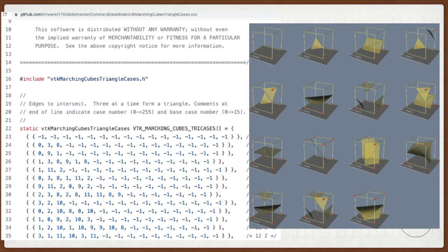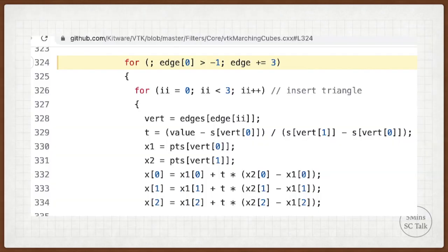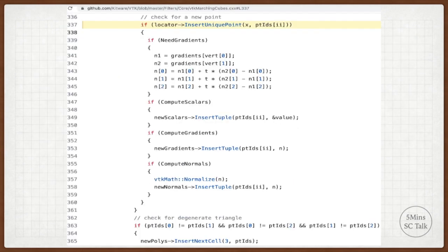Although we can simplify 256 cases into 16 cases, however, from the programming perspective, all kinds of rotation is error-prone. So we use the strategy of space for time to make it more simple. Then we go through each edge where there is intersection, and calculate the coordinates of the intersect points based on interpolation. Then we use the locator to find particular points based on the indices. At last, we insert new points into the polygonal data based on the insert next cell function.